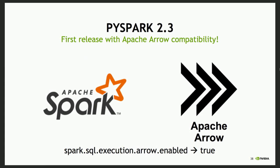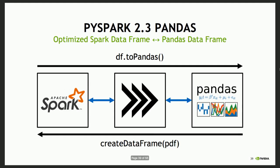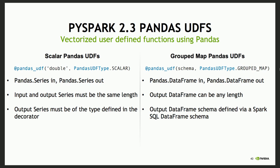Welcome Spark 2.3 and PySpark 2.3 — Spark 2.3 was the first release that actually has Apache Arrow compatibility. There's a simple config you can set that tells it to use Arrow under the hood. Some of the things that using Arrow within PySpark gives you is a much more optimized pipeline to go from a Spark DataFrame to a Pandas DataFrame or vice versa. It also gives you Pandas UDFs — two different kinds to start: the scalar Pandas UDF and a grouped map Pandas UDF.